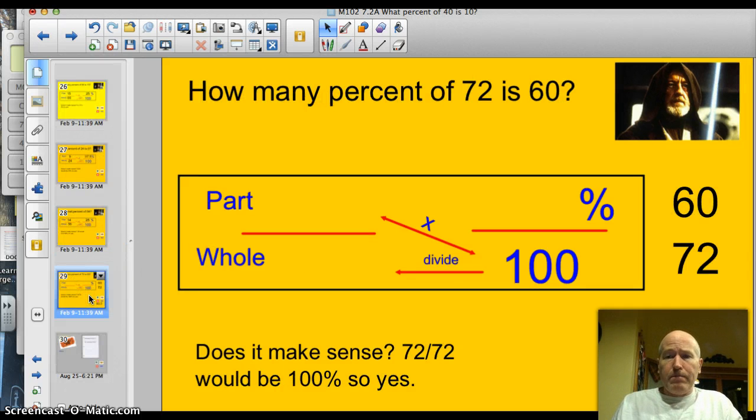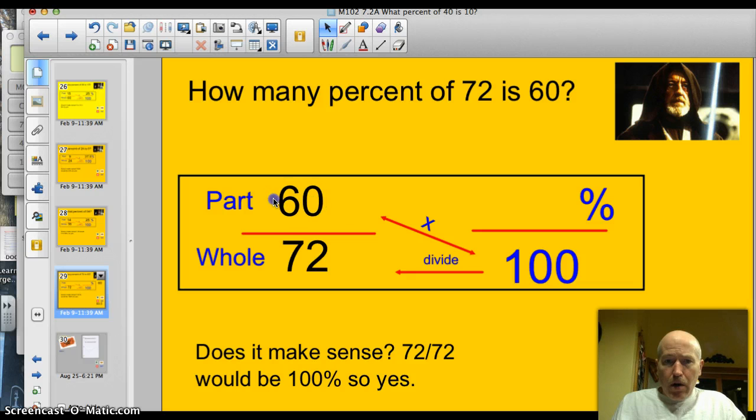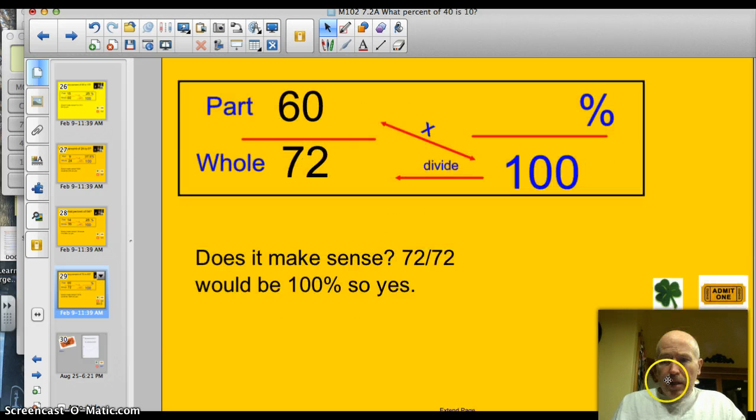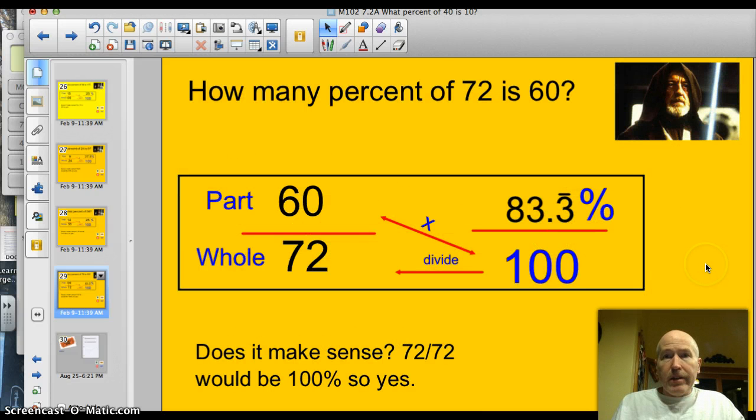Your last problem. Go for it. Let's see. What percent of 72... So, this is going to be the whole number. The part will be 60. If you said 83.3% repeating, you got it right. How did you manage to figure that out? Luke, use the box. Are you sick of that yet?